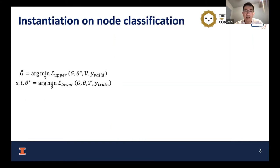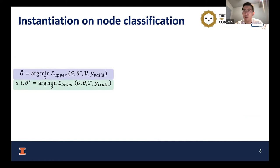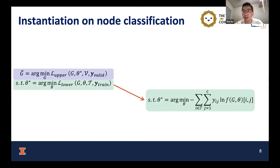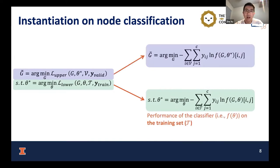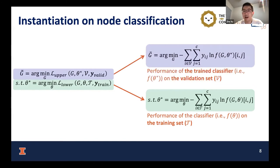In this paper, we pay more attention to the node classification problem, which is one instantiation of our proposed graph sanitation problem. The lower-level problem is instantiated as the performance of the classifier over the training set, and our validation is the performance of the trained classifier over the validation set.